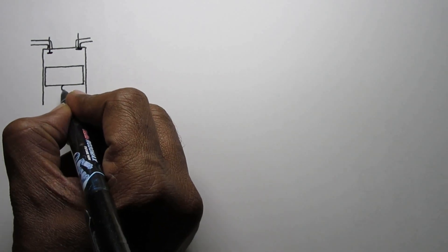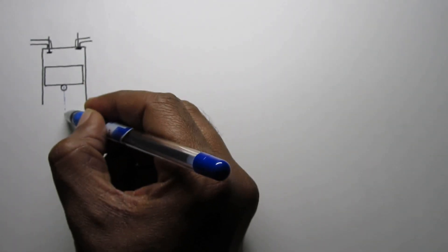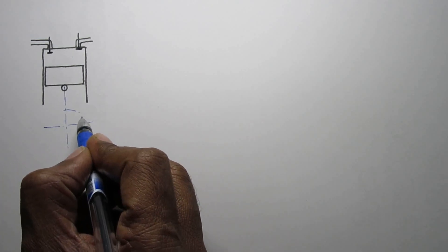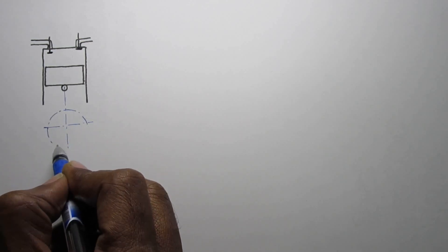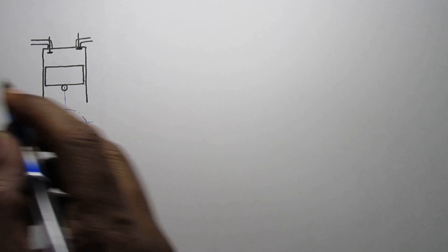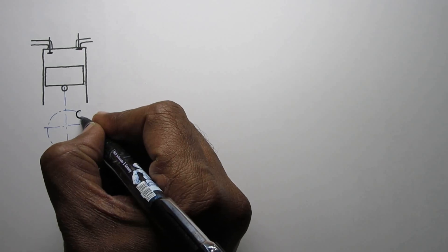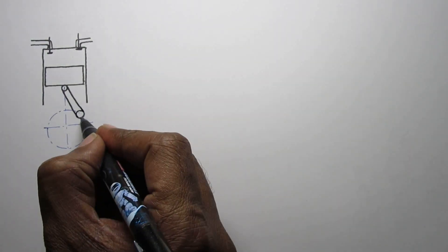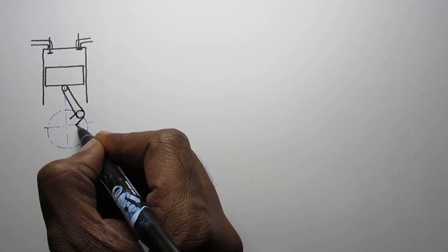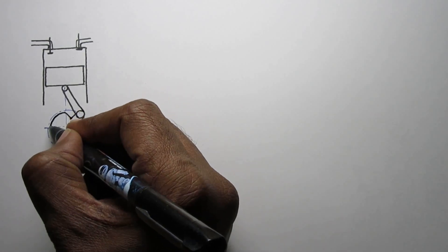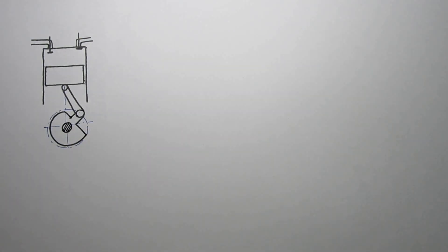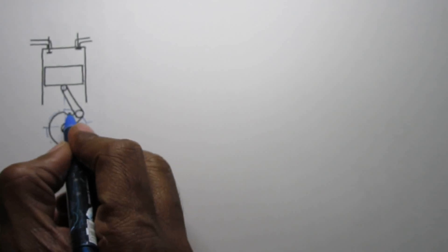To draw the crankshaft and connecting rod position, first draw a small circle just at the center of the piston on the bottom side, then draw a horizontal center line and make a circle at least equal to the diameter of the cylinder. Draw the big end at 45 degrees and join the small and big circle to form the connecting rod. Draw two lines towards the center and make a table-tennis bat section shape for the crankshaft. Always remember the engine runs in a clockwise direction.